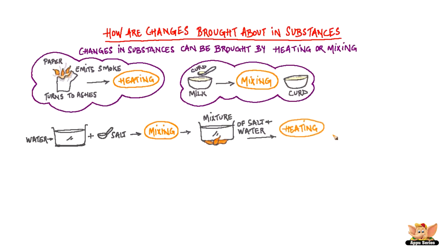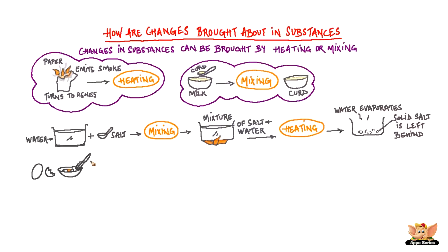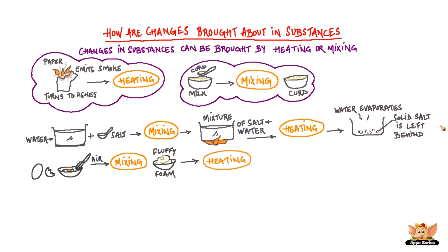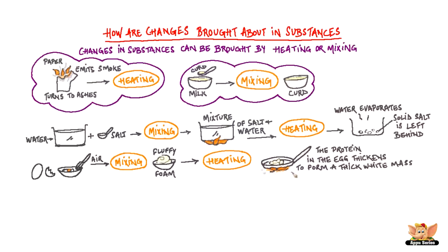On heating this mixture the water evaporates and solid salt is left behind. On mixing egg with air, or on beating it nicely, we get a fluffy foam. On heating egg, the protein in the egg forms a thick white mass.